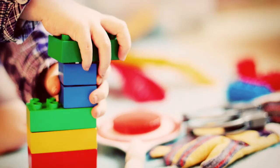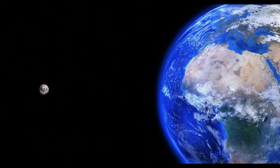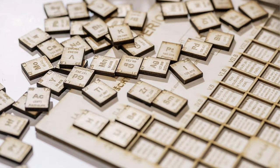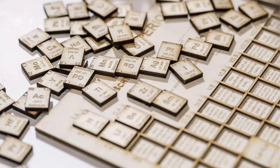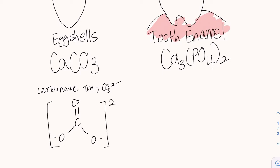As you may know, atoms are the building blocks for all matter in this universe — for example, oxygen, hydrogen, carbon, and the list goes on. In calcium carbonate, we have a carbonate polyatomic ion that has one carbon and three oxygen atoms with a charge of two minus. In calcium phosphate, we have a phosphate polyatomic ion that has a phosphorus and four oxygen atoms with a charge of three minus.